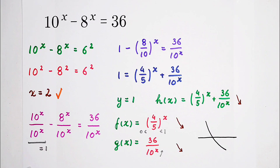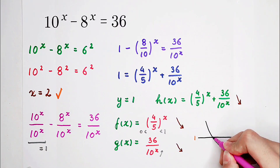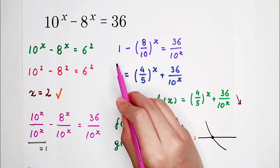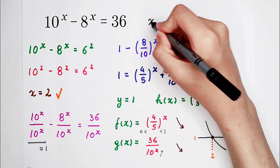A monotonically decreasing function and the horizontal line y equals 1 have at most one intersection. That means this equation has at most one solution. However, we know that x equals 2 is a solution, so if these two functions have an intersection they have only one — meaning x equals 2 is the only solution of this equation.